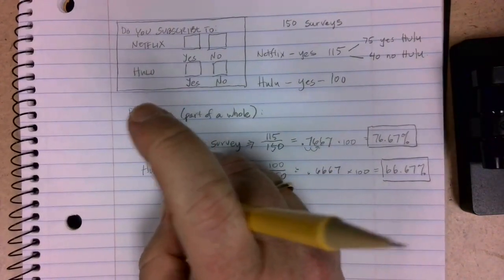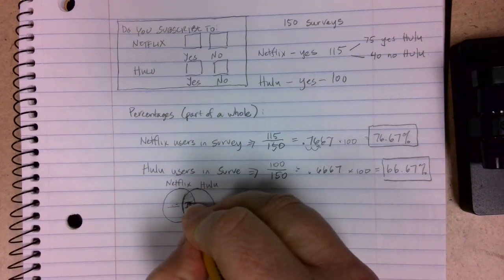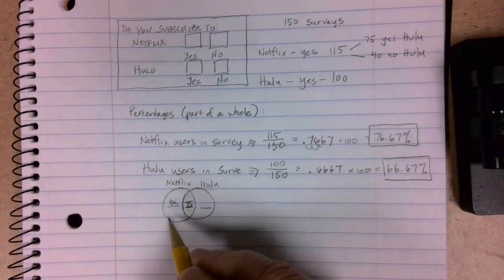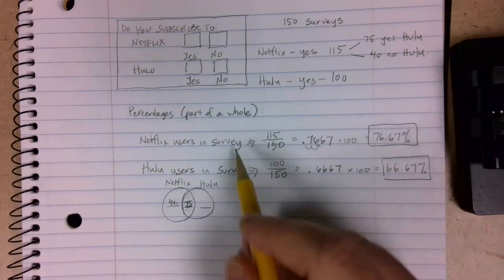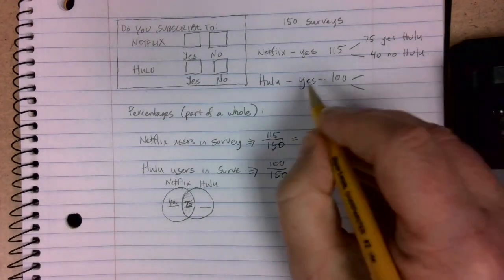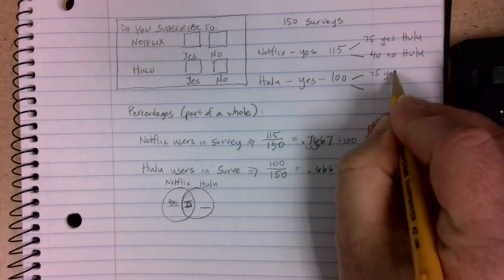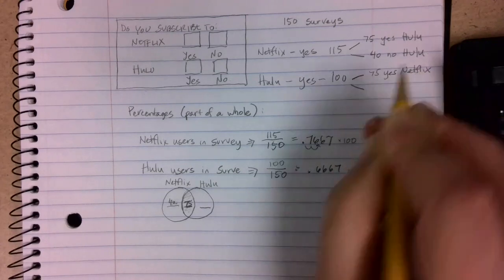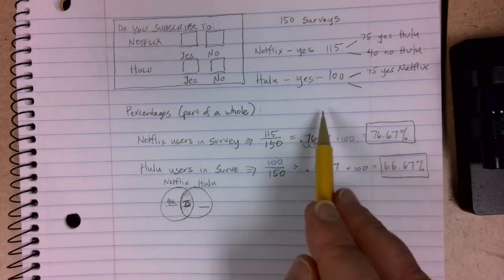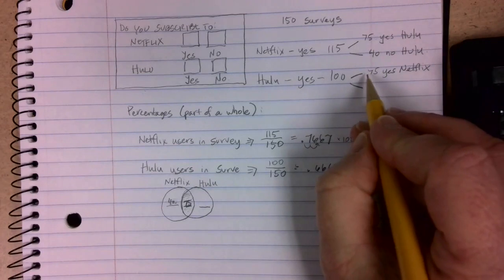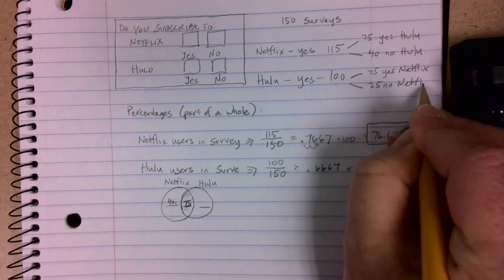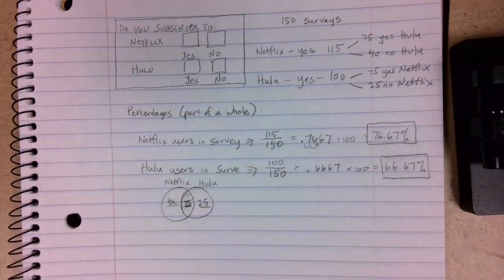75 are in the crossover between Netflix and Hulu. 40 are only Netflix subscribers. Now, if I come here to the Hulu description, if I looked at all of the people that said yes to Hulu, there were 75 people that said yes to Netflix. This should make sense, right - if the crossover of people that had both Netflix and Hulu was 75, that should show up in both of my breakdowns here. There were only 100 people that said yes to Hulu, so that leaves 25 people that said no to Netflix.